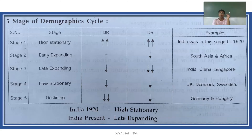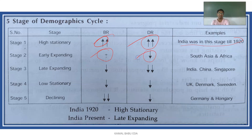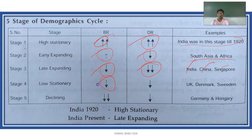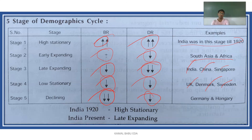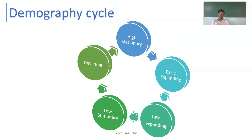Looking at the summary table: in Stage 1, both birth rate and death rate are high — India was in this stage till 1920. In Stage 2, Early Expanding, the birth rate stays high while the death rate starts decreasing — countries like South Asia and Africa are in this stage. In Stage 3, Late Expanding, the birth rate has decreased a little and the death rate has decreased further — countries like India, China, and Singapore are at this stage.